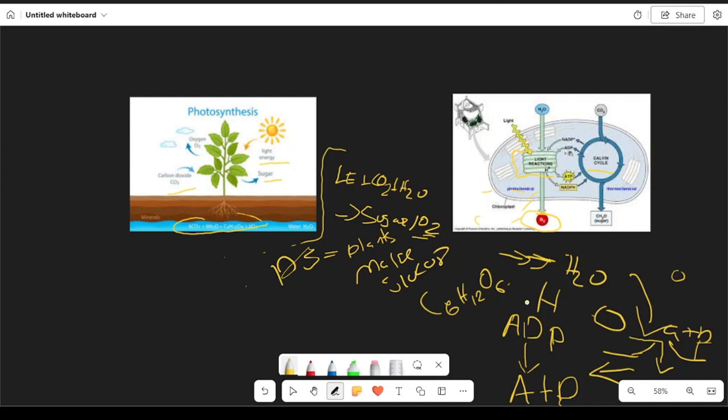The next step is the Calvin cycle, or the light independent reaction, which does not require any light. Coming back to the basics - light energy, carbon dioxide, and water don't all come together at the same time. In the light dependent reaction, water and light are used. Carbon dioxide is not used until the light independent reaction.